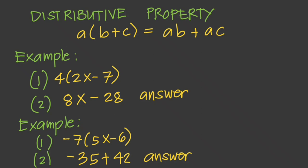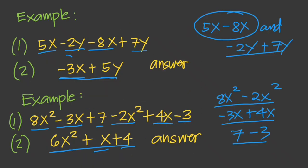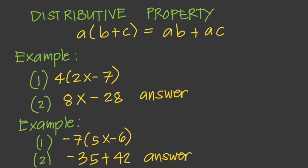As we combine like terms, we need to interpret subtraction signs as part of the following term. If we see a subtraction sign, we treat the following term as a negative term — the sign always stays with the term. Another method of simplifying is known as distributing. We often work with problems that have parentheses that make solving difficult, but it is solvable.